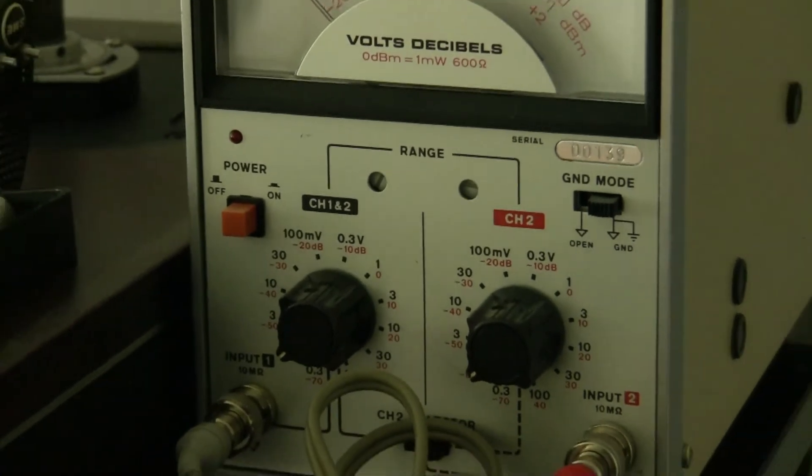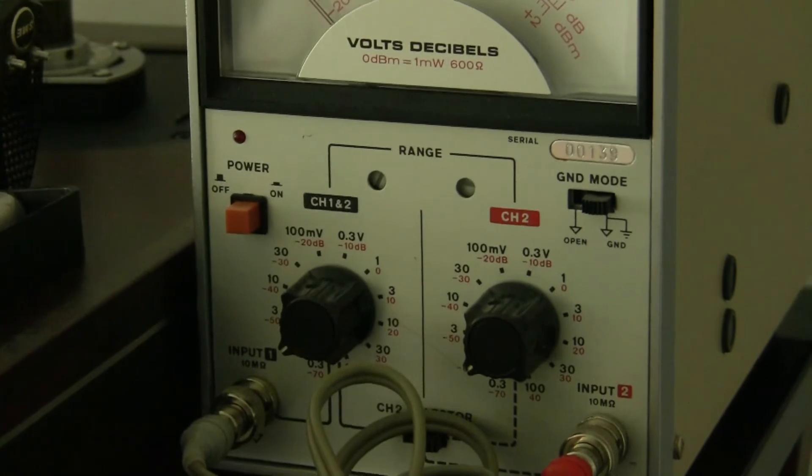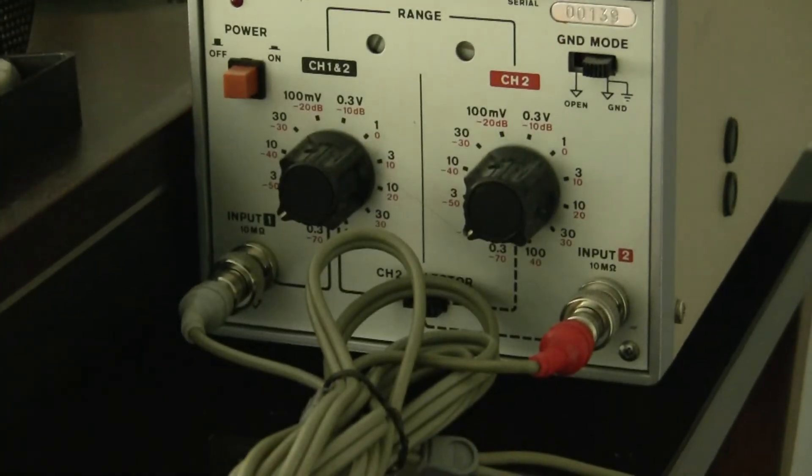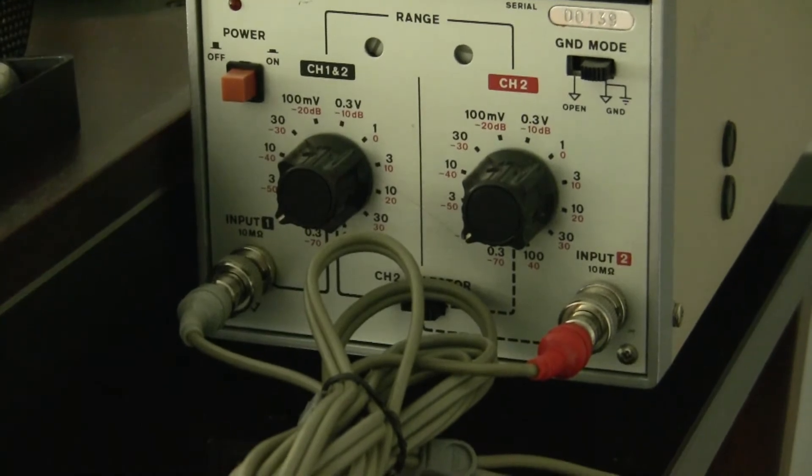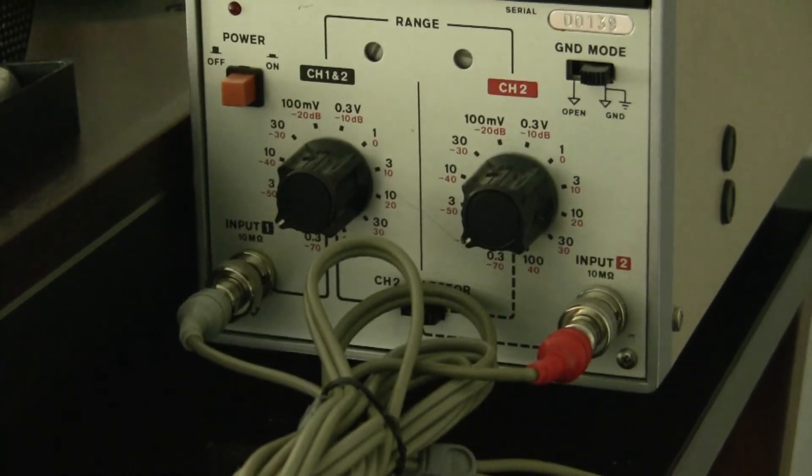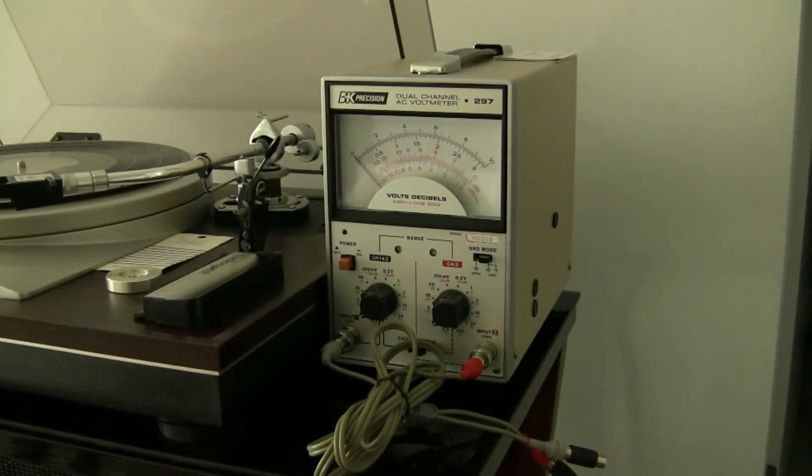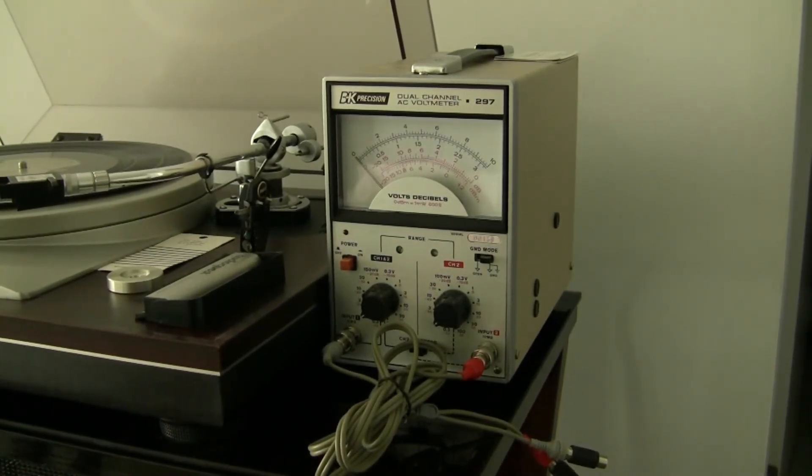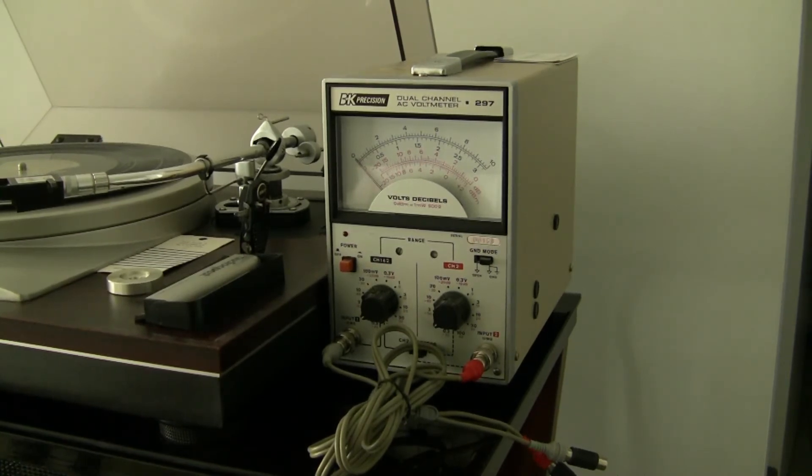It has two BNC inputs that you can convert to RCA, and more importantly, there's a ground at the back like the ground of a phono input of an amplifier, where you can connect the cartridge or the turntable's ground.